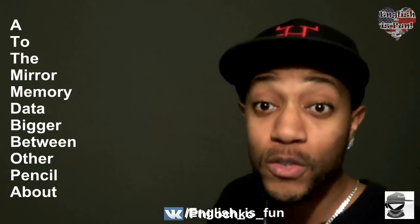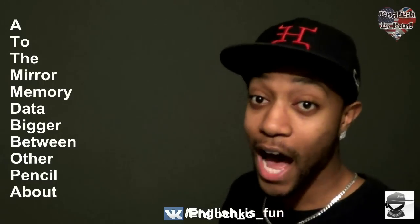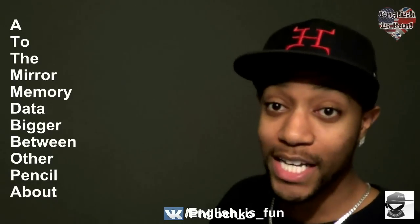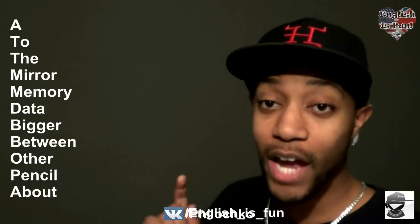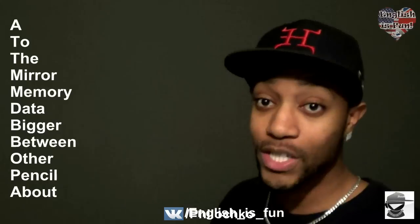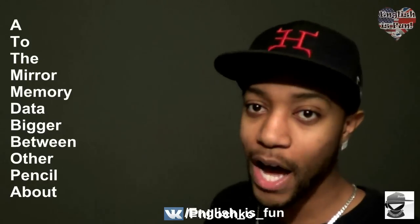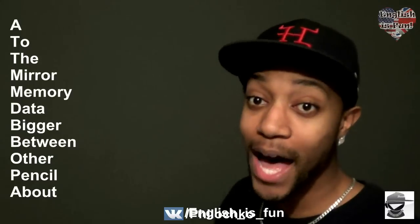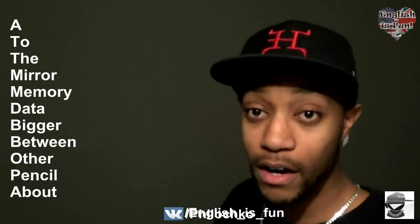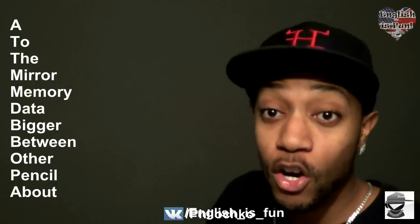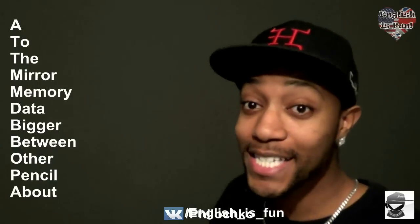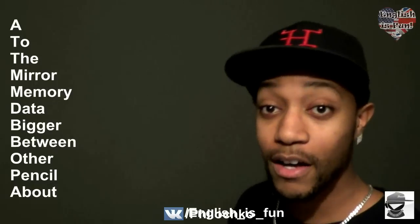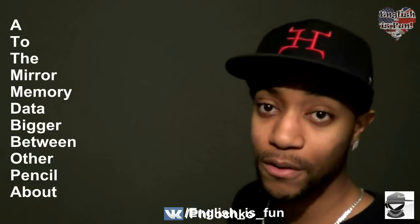The first word is 'a'. How do we schwa 'a'? The whole word gets schwa'd — it's just 'a'. When you use the letter 'a' in a sentence as a word, it gets schwa'd. For example, 'I have a dollar in my pocket' is actually 'I have a dollar in my pocket.' 'A girl I know is here' — I would most likely say 'a girl I know is here.' Schwa.